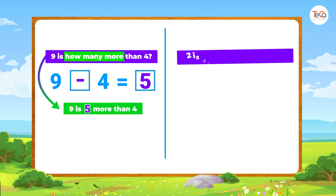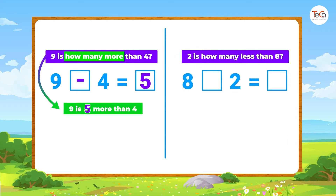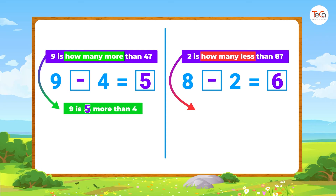Next: two is how many less than eight? To find how many less, we also find the difference between the two numbers. Here we subtract two from eight to get six. So two is six less than eight.